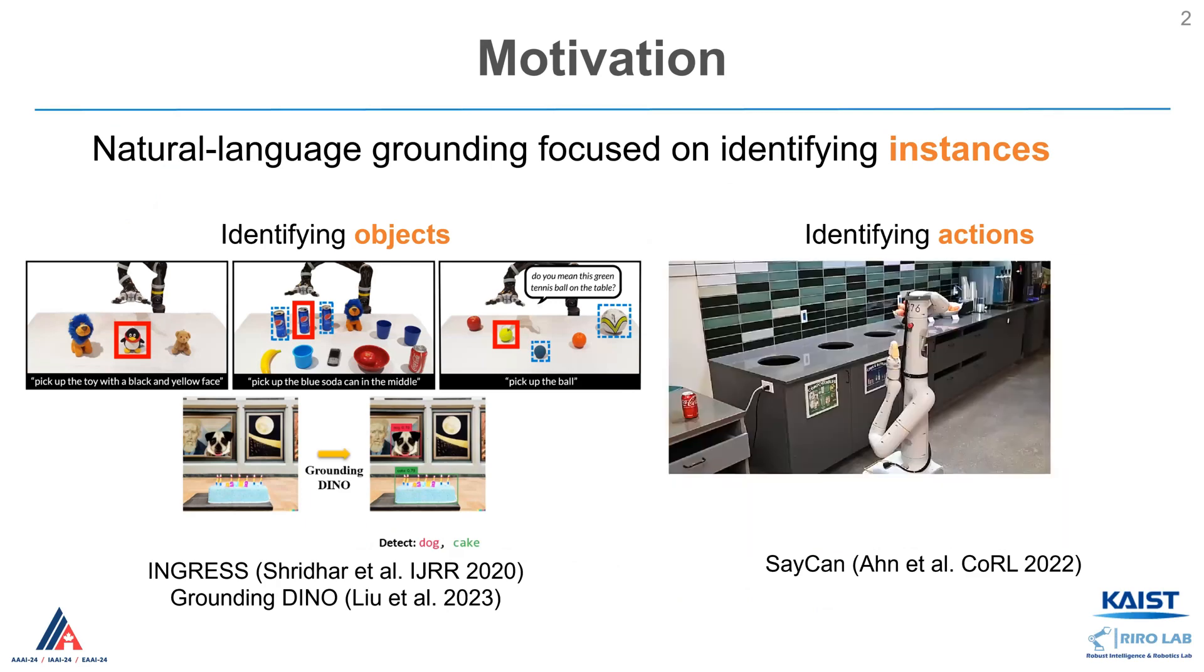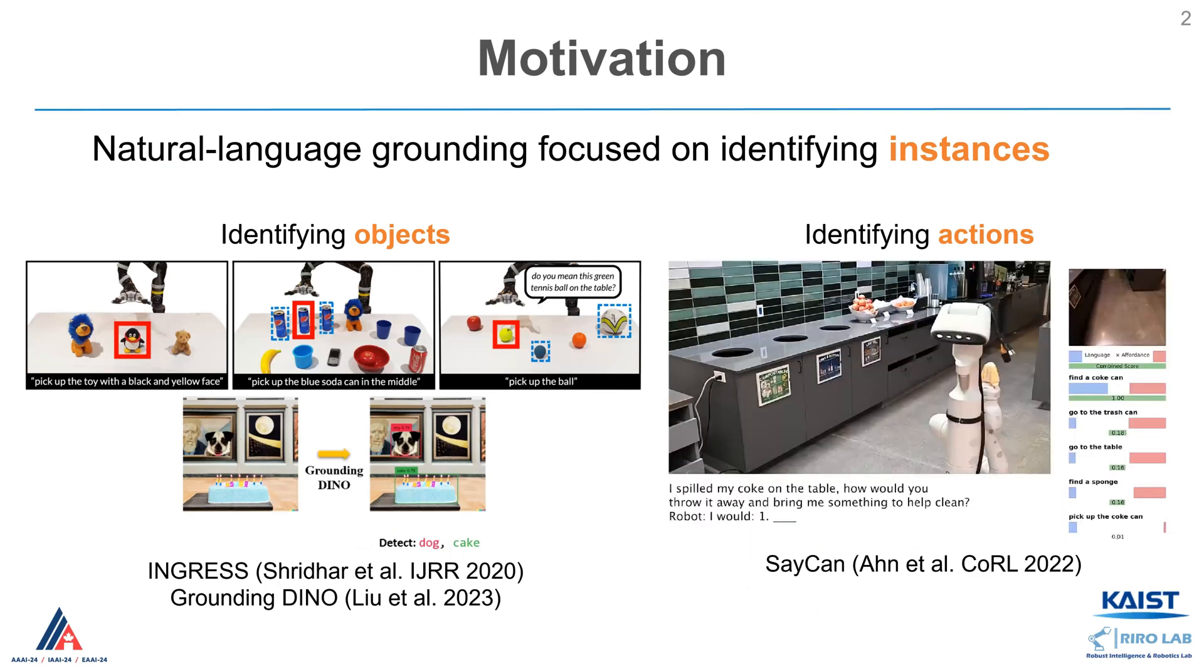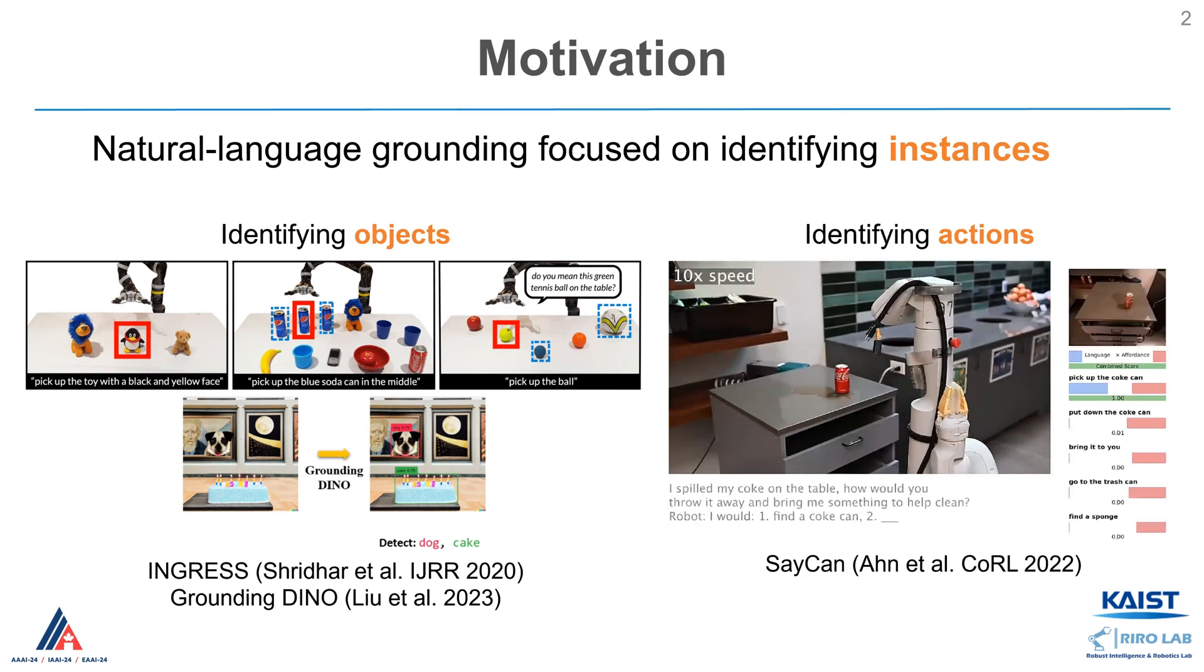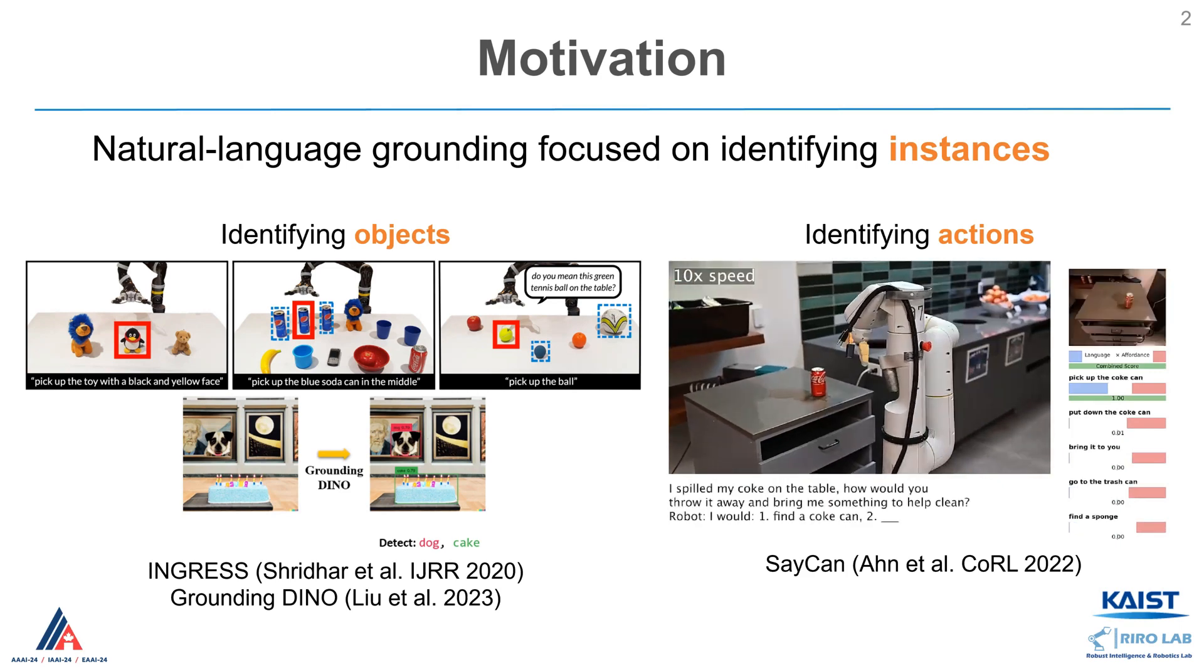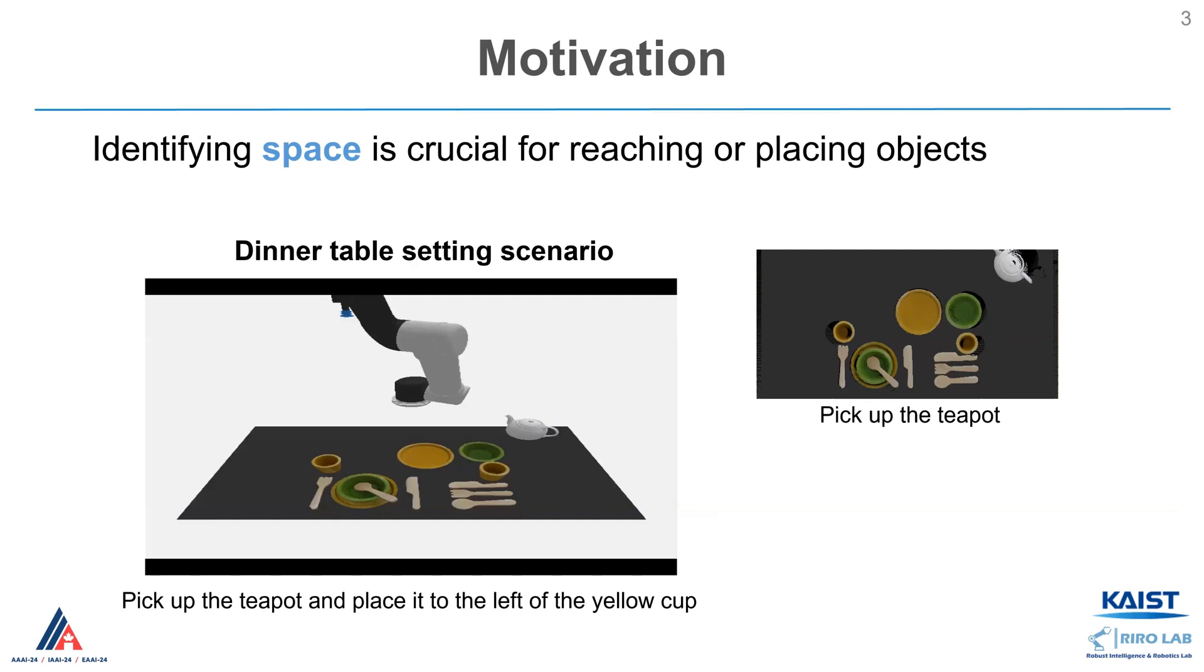Natural language grounding methods have primarily focused on identifying instances, such as objects or actions. However, identifying space is also crucial for reaching or placing objects.